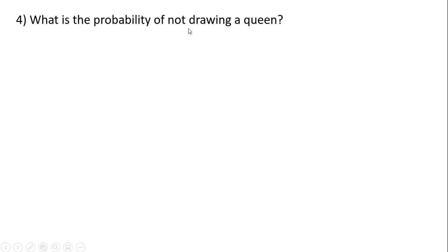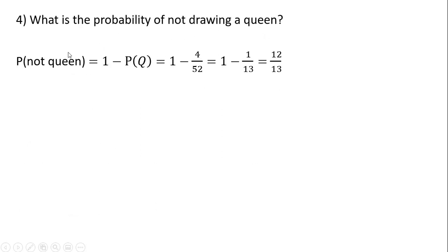What is the probability of not drawing a queen? The probability of not drawing a queen is going to be one minus the probability of drawing a queen. There are four queens, so one minus four divided by 52 leaves us with twelve thirteenths.